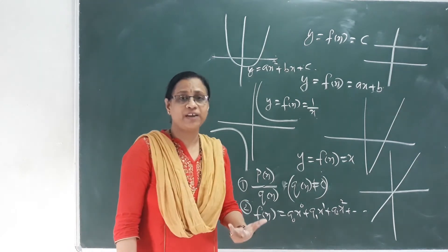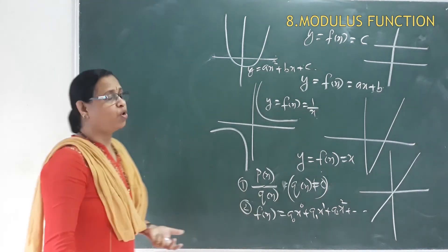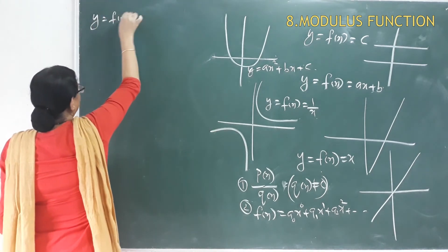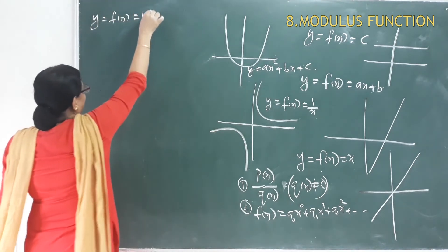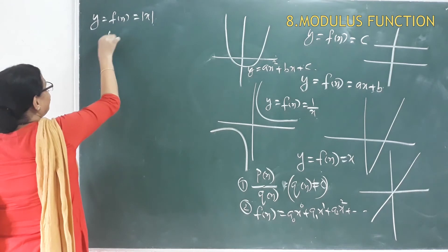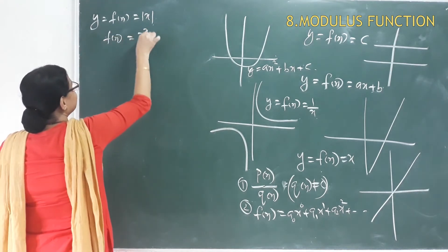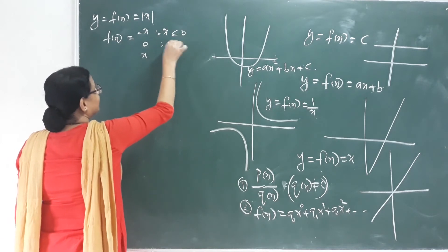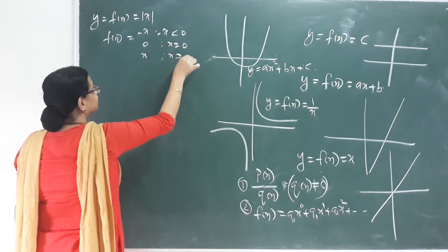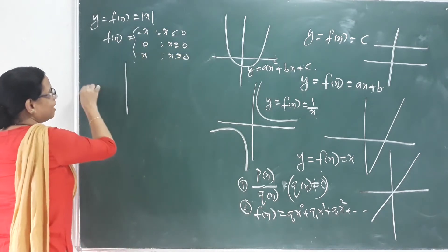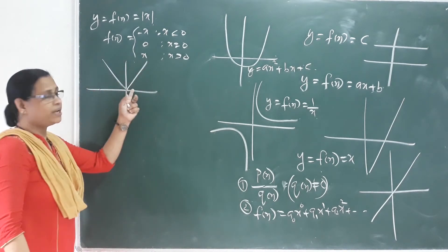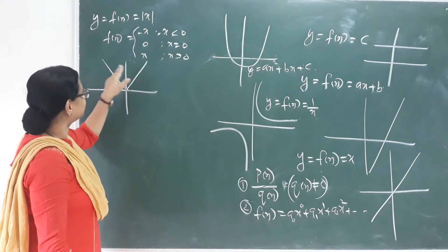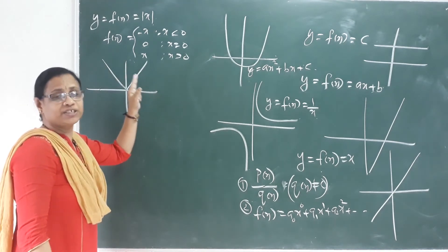The next function is the modulus function. y = f(x) = |x|, which equals: minus x when x < 0, zero when x = 0, and x when x > 0. The graph of the modulus function is V-shaped, and its domain and range follow from that V shape.